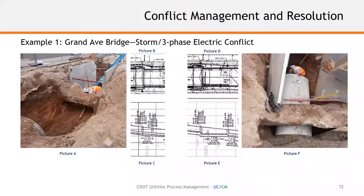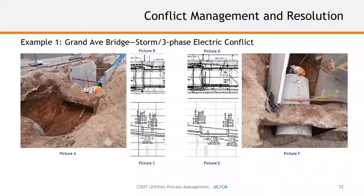It kept the project moving and on schedule, which was a huge benefit to this very complex utility project. Having that field effort available certainly showed its benefit in this situation. Picture F shows the 19-inch elliptical pipe being installed underneath that three-phase electrical system.